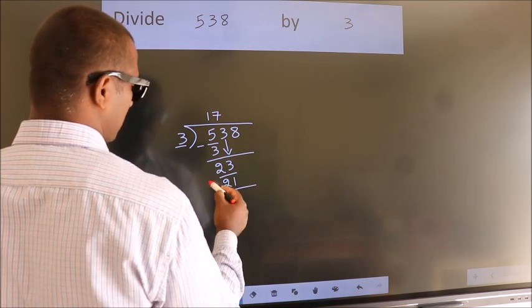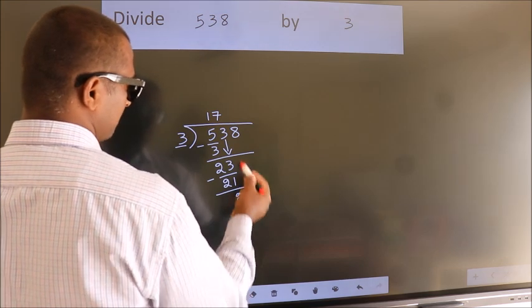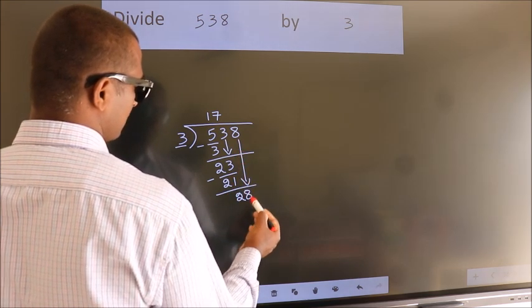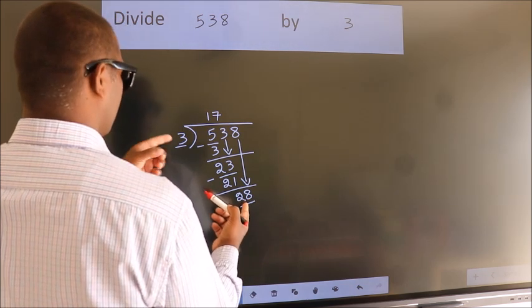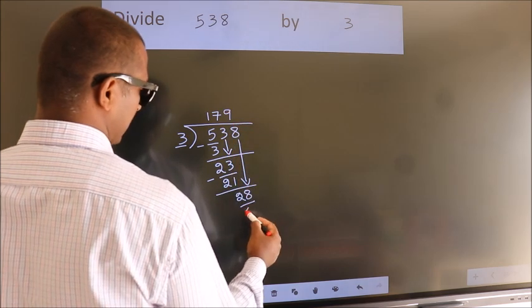Now we subtract. We get 2. After this, bring down the beside number. So 8 down. So 28. A number close to 28 in 3 table is 3 9s 27.